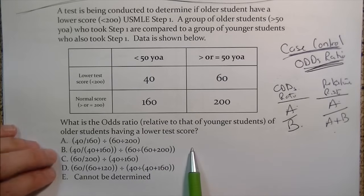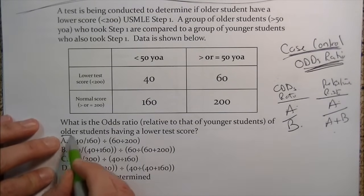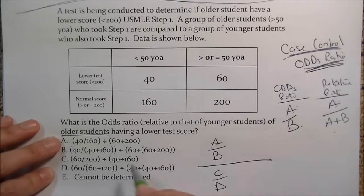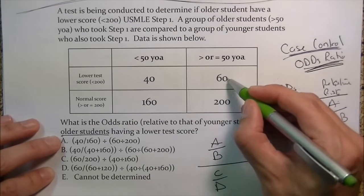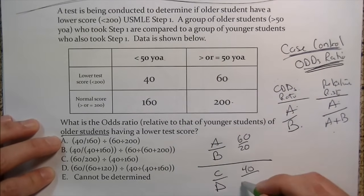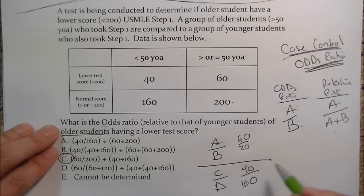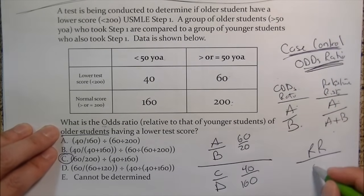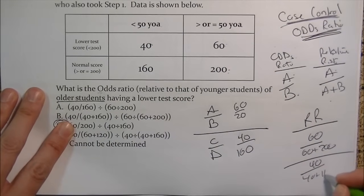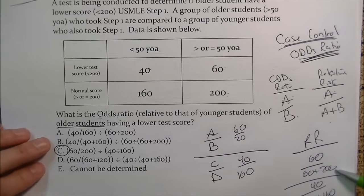The question asks for the odds ratio of older students having lower test scores relative to younger students. Older students go on top — it's one number over one number: 60 over 200, over 40 over 160. That's answer choice C. If it were relative risk instead, it would be 60 over (60 plus 200), over 40 over (40 plus 160) — one number over two, over one number over two.